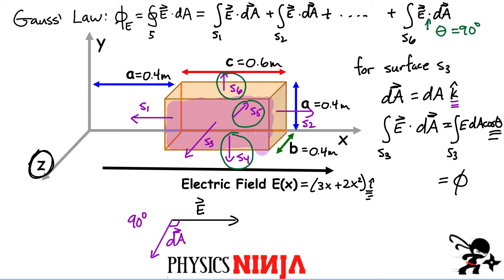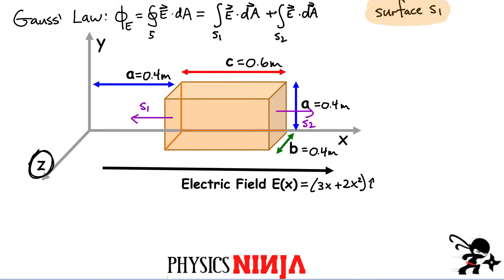That simplifies our total electric flux — we don't have any of those terms anymore, we're only left with two terms: S1 and S2. Let's start with the first term, integrating over S1. We need to know what is the electric field everywhere on that surface. At surface S1, the value of x everywhere is simply equal to A, which is 0.4. So the electric field, since it only depends on x, has the same value everywhere on that surface.